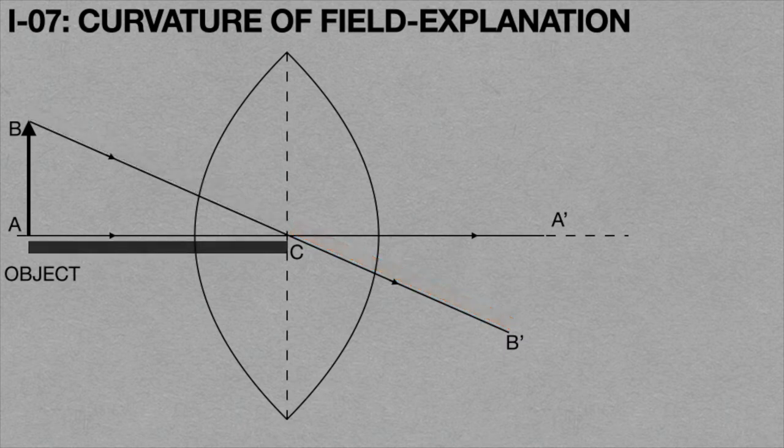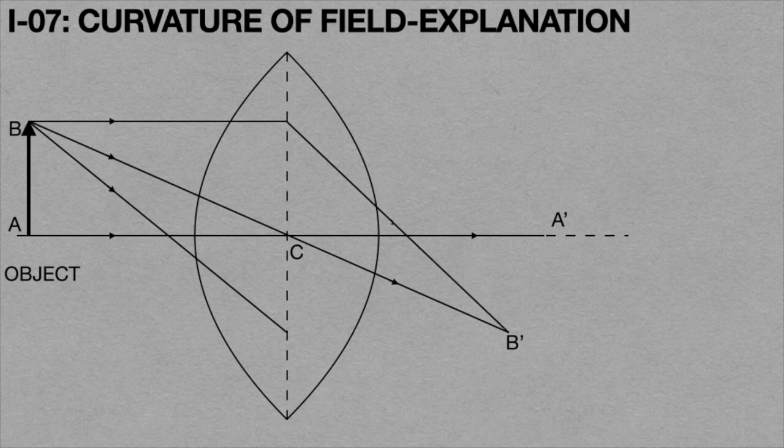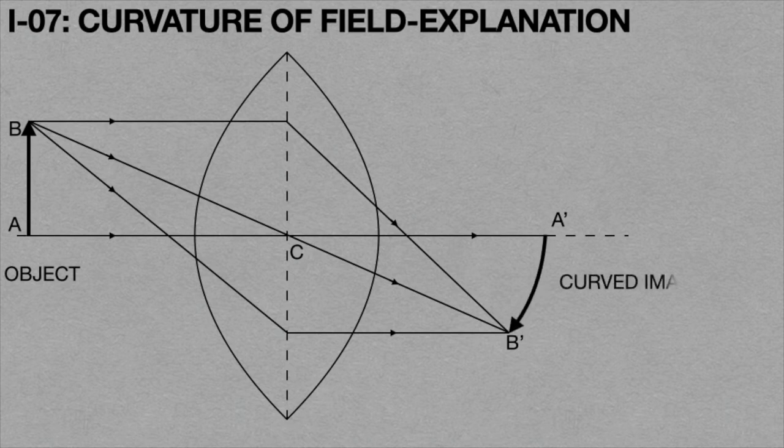In addition, the light rays travel in all directions which are incident on the lens and form an image at B dash of B only. As a result, a curved image A dash B dash is formed for AB straight line.